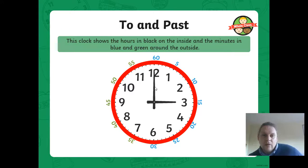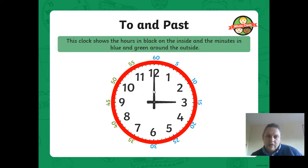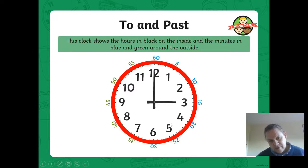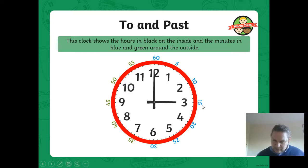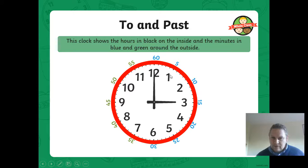We're talking about to and past. This clock shows the hours in black on the inside and the minutes in blue and green on the outside. So we've got our normal hours on the clock face, and then we've got 60 at the top, then 5, 10, 15, 20, 25, 30. Have a think to yourself - why have we got those numbers around the outside? These intervals between the numbers are 5-minute intervals. So that's 5 minutes at the 1.